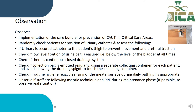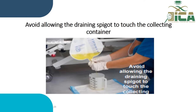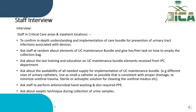Observe implementation of care bundles for prevention of CAUTI. Check patients for position of urinary catheter and assess: if it is secured to the patient's thigh, if it is fixated below the level of the bladder, if there is a continuous closed drainage system, and if the collection bag is emptied regularly using separate collecting containers for each patient, avoiding the draining port touching the container. Check for routine hygiene and whether staff are following aseptic technique and PPE. Interview staff to confirm their in-depth understanding: ask how to empty the collection bag, about availability of supplies, ask them to perform antimicrobial hand washing, and about aseptic technique.